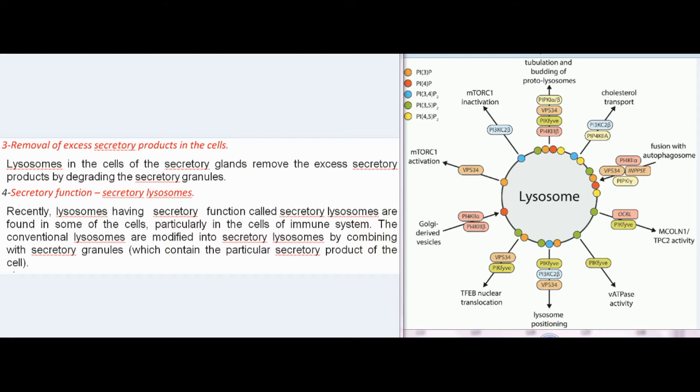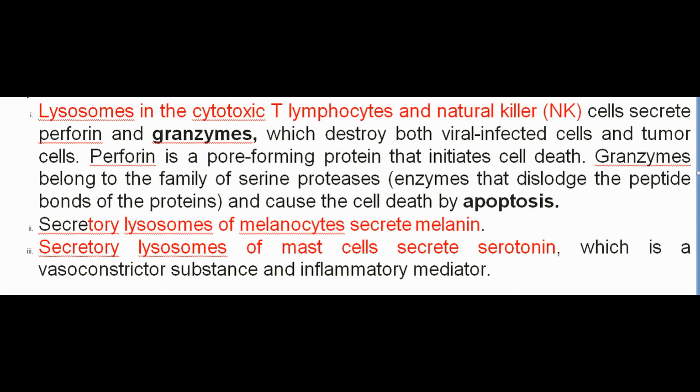Secretory lysosomes are lysosomes with secretory function found in some cells, particularly cells of the immune system. Conventional lysosomes are modified into secretory lysosomes by combining with secretory granules. Lysosomes in cytotoxic T lymphocytes and natural killer (NK) cells secrete perforin and granzymes, which destroy viral-infected cells and tumor cells. Perforin is a pore-forming protein that initiates cell death. Granzymes belong to the family of serine proteases and cause cell death by apoptosis. Secretory lysosomes of melanocytes secrete melanin, and those of mast cells secrete serotonin, a vasoconstrictor substance and inflammatory mediator.